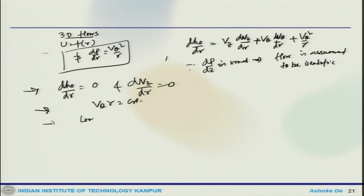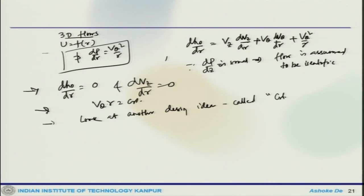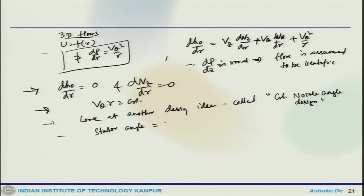Now let us look at another design idea called the constant nozzle angle design. This is another approach we can think about, where the nozzle or stator angle is assumed to be constant across the radius, in order to avoid having to manufacture nozzles of varying outlet angle.